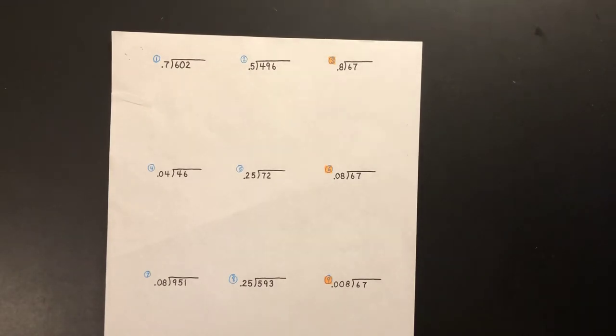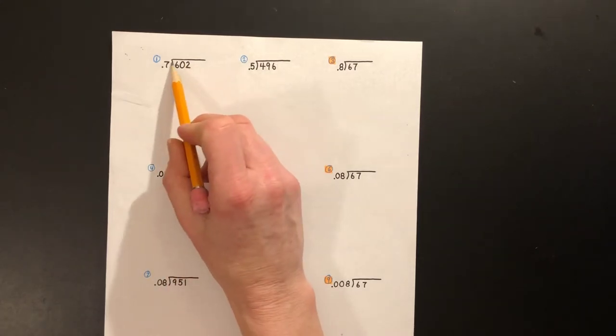Alright, I will help you set up three of these and then I'll let you go ahead and finish them. I'm not going to do the division, you can do that on your own, but I want to make sure you set it up correctly. I noticed that on this page every single one of the dividends is already a whole number - there's no decimal in any of these.